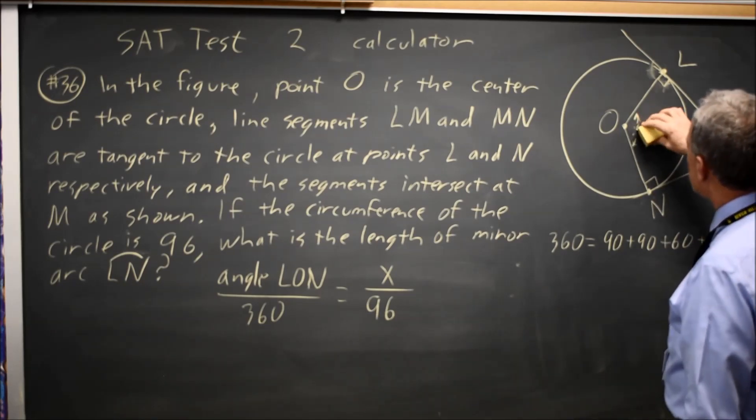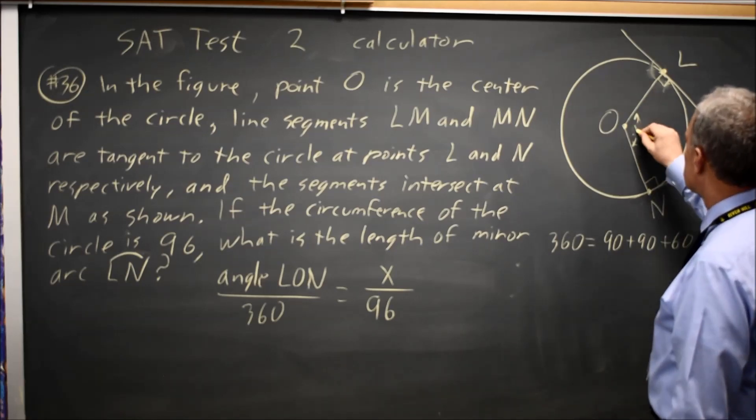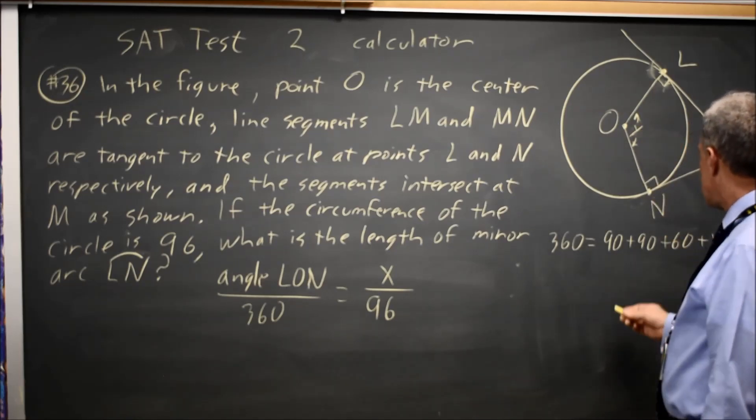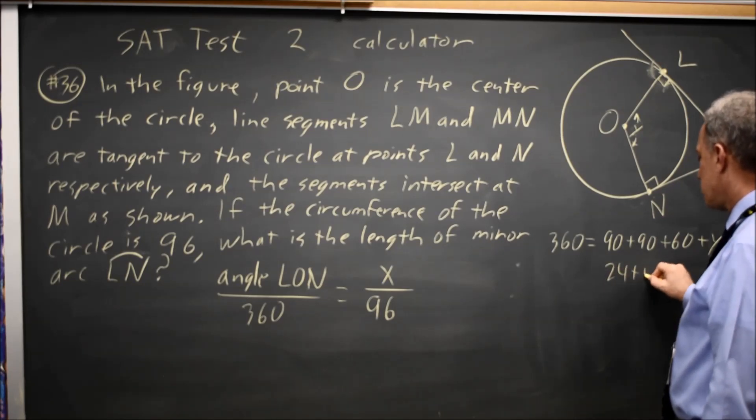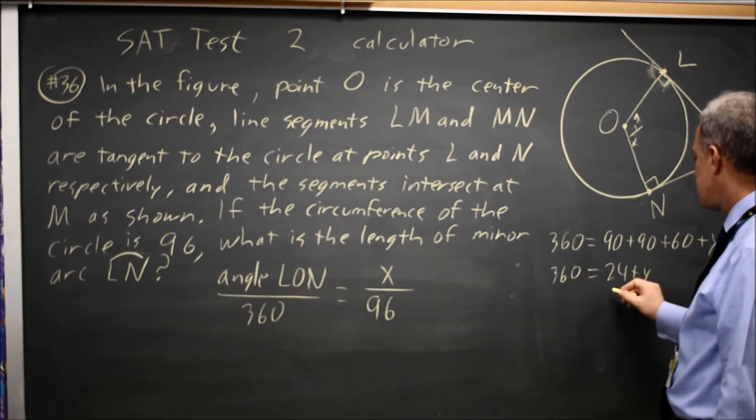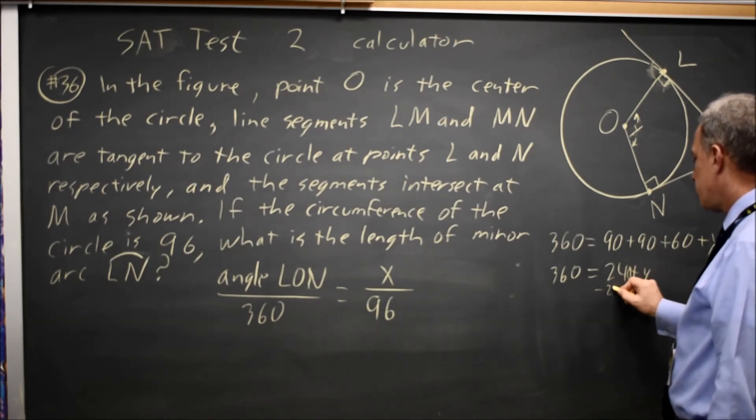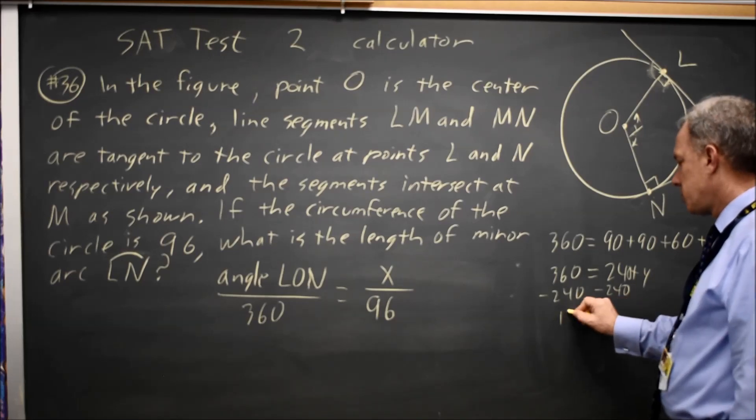Right here, I don't want to call that X because I already have an X. Let's call it Y. So 90 to 90 is 180, plus 60 is 240, equals 360. 240 plus Y equals 360, minus 240. Angle Y equals 120.